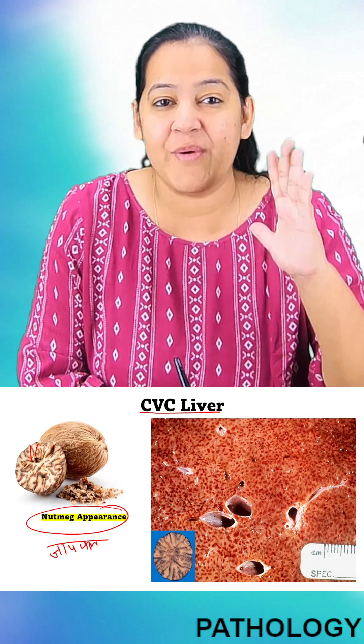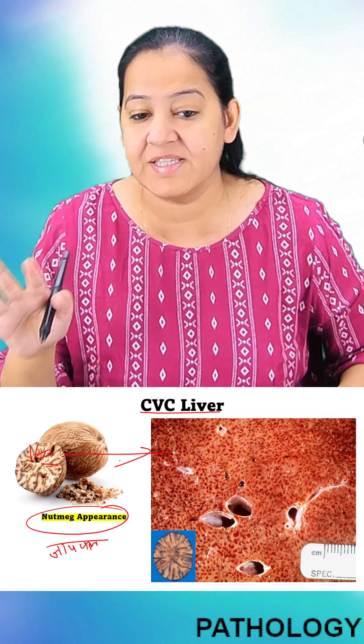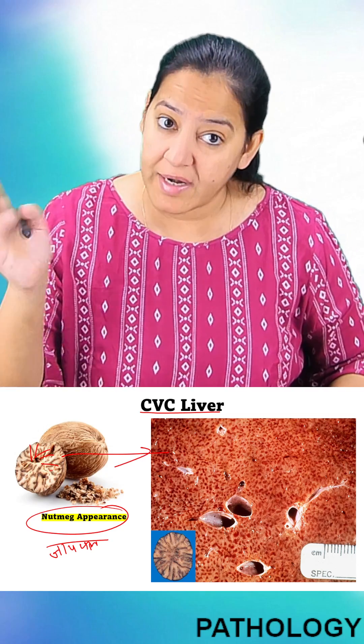Because of the alternate red, yellow, red, yellow mottled appearance of the tissue, it is compared with the nutmeg. To understand the nutmeg appearance, you have to understand the lobular model of the liver.